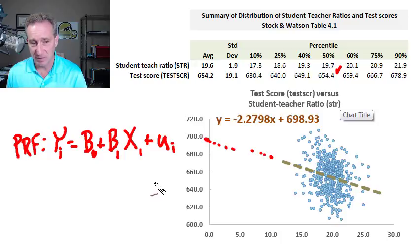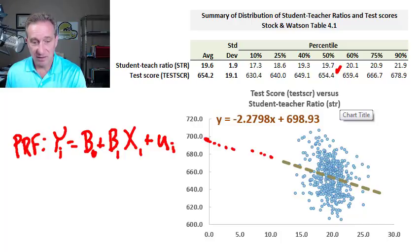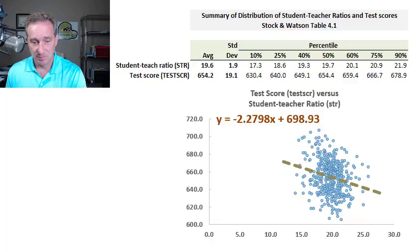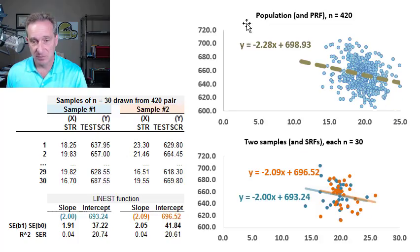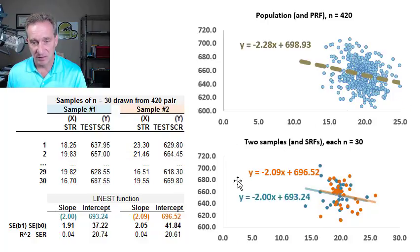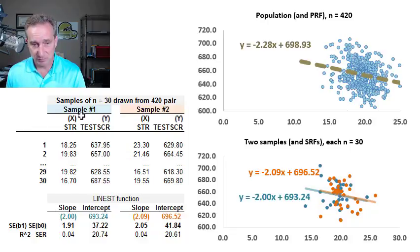This is the single population regression function that draws a line through the single population. We'll now look at the sample regression function. In the upper right, shrunk down, is the same population and population regression function. Below I'm plotting two different sample regression functions — in blue and in orange. In blue, I'm drawing 30 pairs from the population.